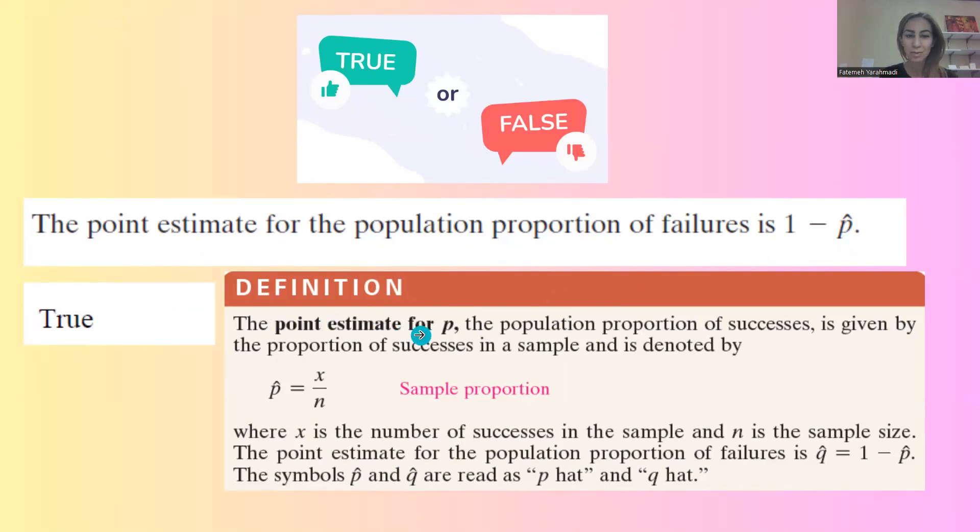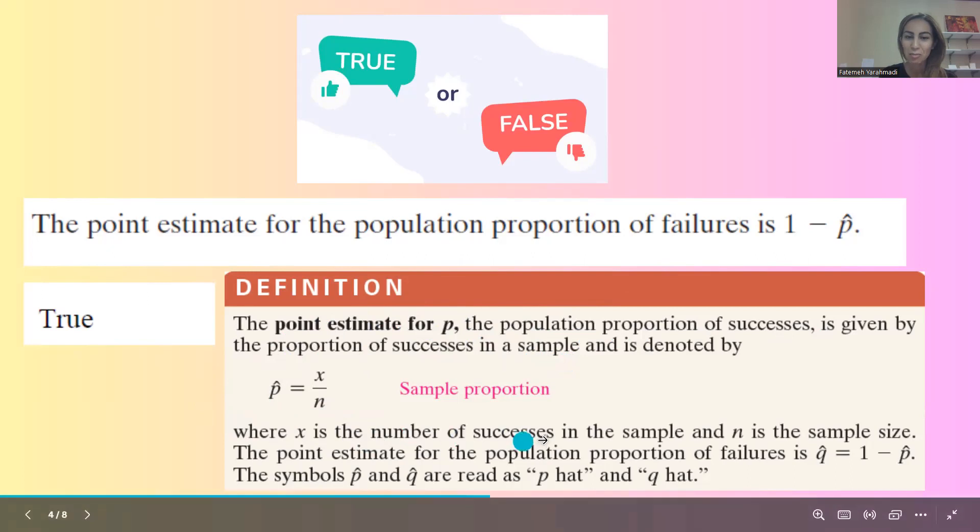The point estimate for p, or population proportion, is given by the proportion of successes in a sample and it's denoted by p hat equals x divided by n. X is the number of successes in the sample and n is the sample size.